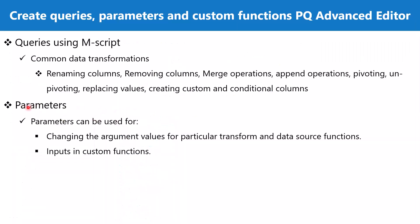Parameters are used in Power Query to pass values to other queries. A parameter serves as a way to easily store and manage a value that can be reused, giving us the flexibility to dynamically change the output of queries depending on their values. Parameters can be passed as a single value or as a list, and they also serve as input to custom functions, allowing us to change argument values for particular transform and data source functions.